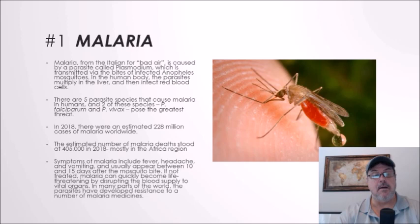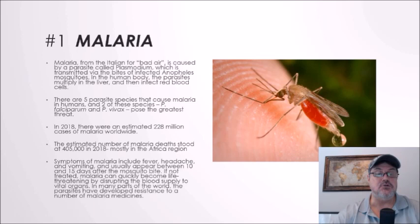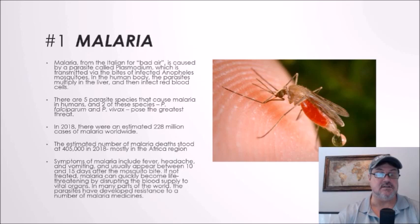Two of these species, Plasmodium falciparum and Plasmodium vivax, pose the greatest threat. In 2018 there were an estimated 228 million cases of malaria worldwide, with an estimated 405,000 fatalities, primarily in Africa. Symptoms include fever, headache, and vomiting, usually appearing between 10 and 15 days after the mosquito bite. If not treated, malaria can quickly become life-threatening by disrupting the blood supply to vital organs, and in many parts of the world the parasites have developed resistance to malaria medicines.